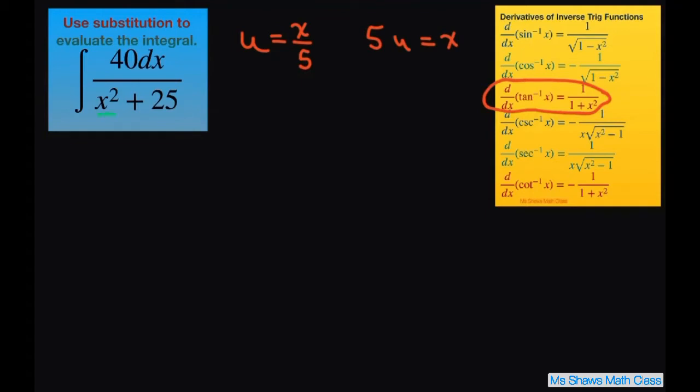And therefore because we have this x squared we're trying to solve for x, x squared is going to be 25u squared when you square both sides here. And then our du, our derivative is just going to be 1/5 dx. Or our dx is going to equal 5du.